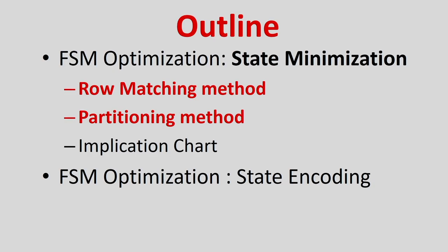The outline of today's class is FSM optimizations. Particularly, this class we will discuss state minimization — we will try to reduce the number of states of an FSM. There are two or three methods available: one is the row matching method, another is the partitioning method, and the third is the implication chart method.